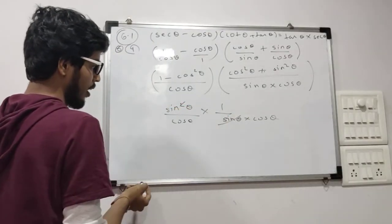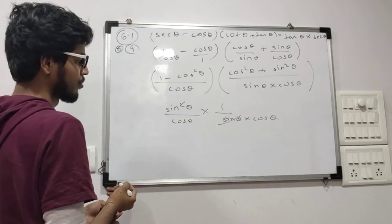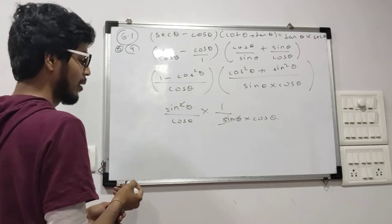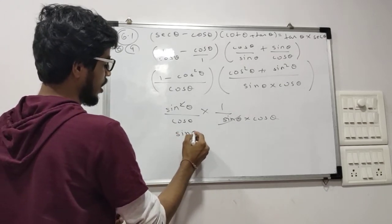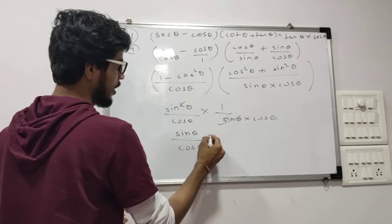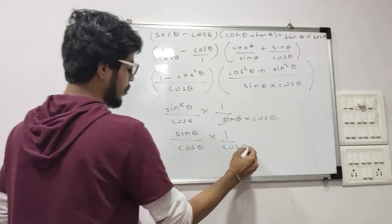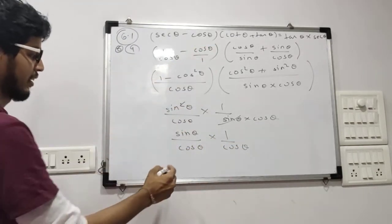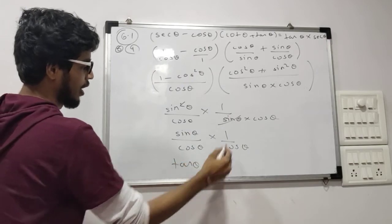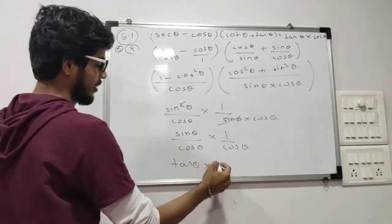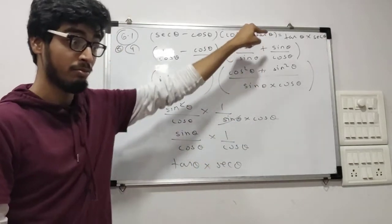Now sin theta cancels out in multiplication. So we get sin theta upon cos theta into 1 upon cos theta. And sin theta upon cos theta is tan theta, and 1 upon cos theta is sec theta. So when you solve, you arrive at tan theta into sec theta — which is the RHS. Clear?